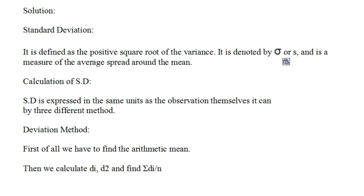Standard deviation is the square root of variance. That means you first calculate the variance, and then take its square root — that answer becomes the standard deviation.